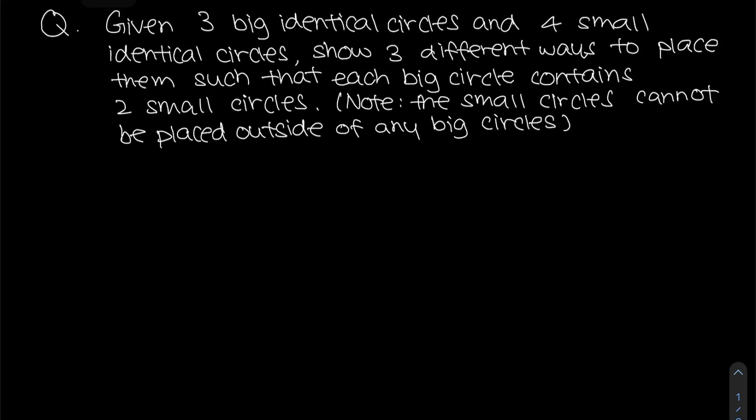For this lesson, we will be using a Venn diagram method to solve it. So let's read this question. They said that you have three big identical circles as well as four small identical circles. Show three different ways to place them such that each big circle contains two small circles.